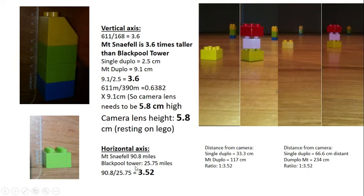On the horizontal axis, Mount Snaefell is 90.8 miles. Blackpool Tower is 25.75 miles. So Mount Snaefell is 3.52 times further away than Blackpool Tower.